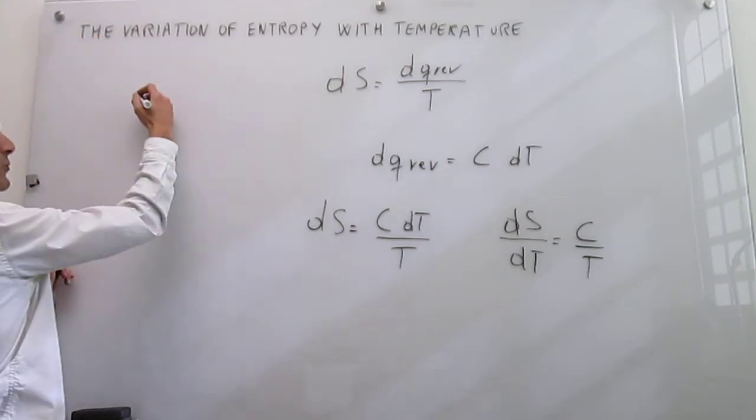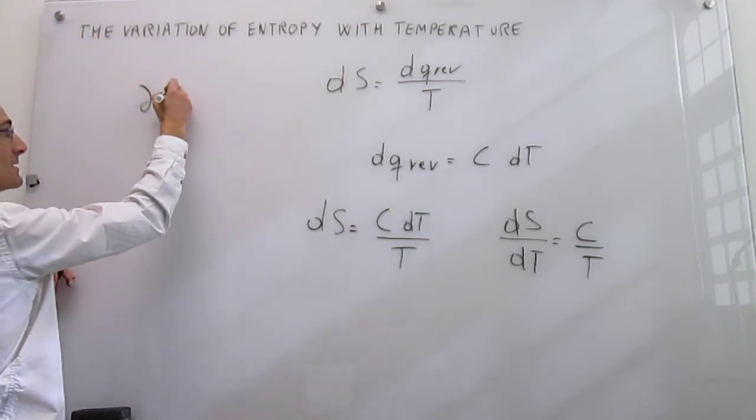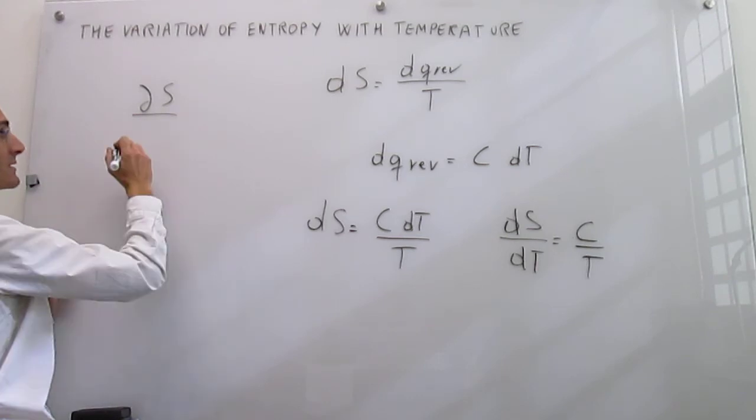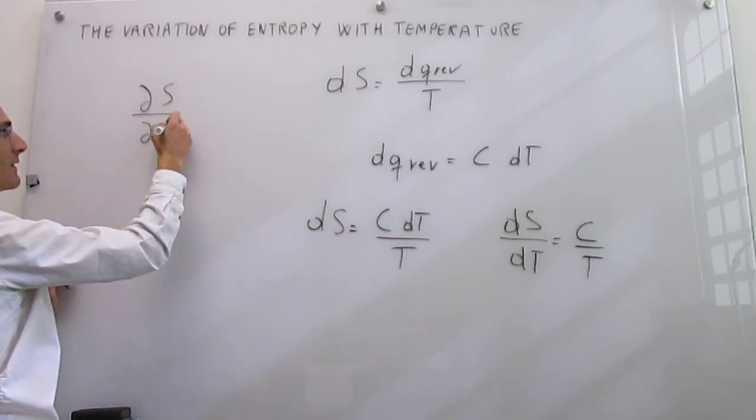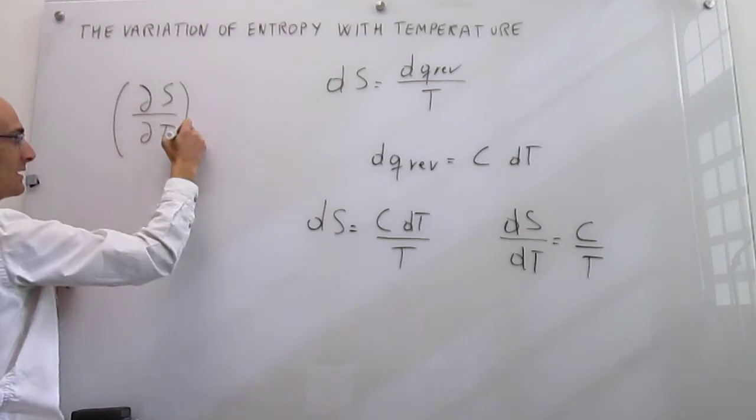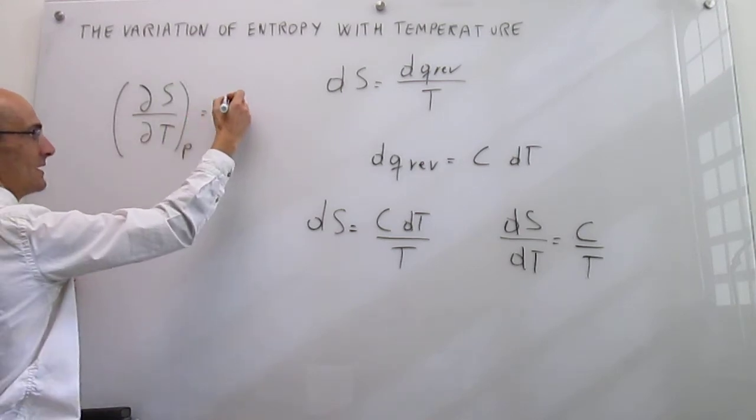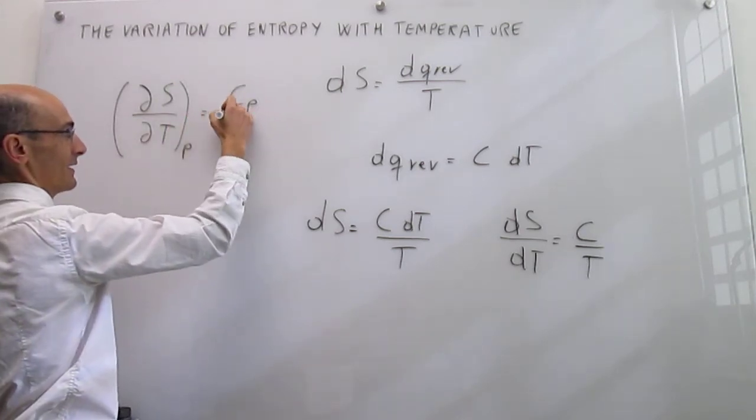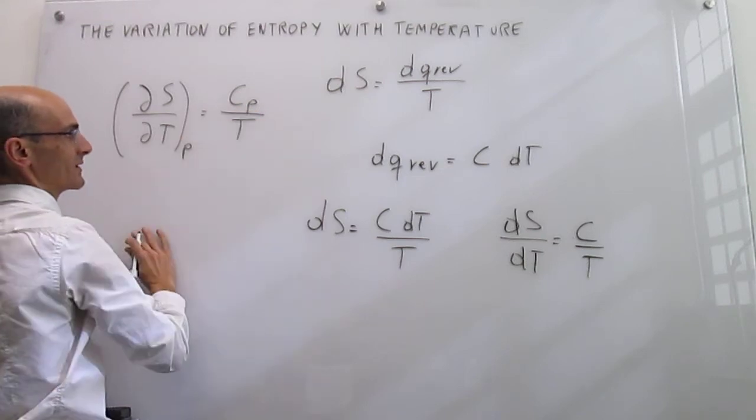To wrap up here, if you're doing this at constant pressure, then the idea is that the way that the entropy changes with temperature, if you hold the pressure constant, that is simply the heat capacity at constant pressure divided over the temperature.